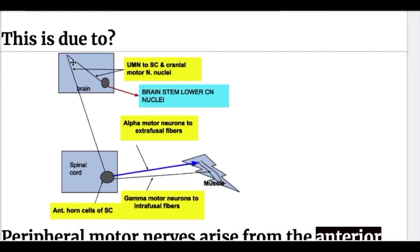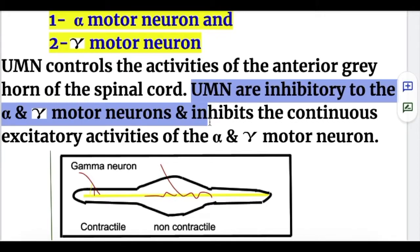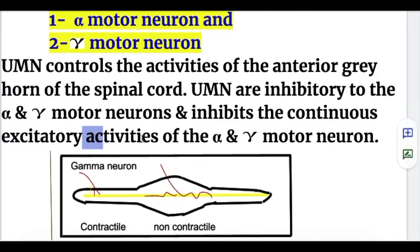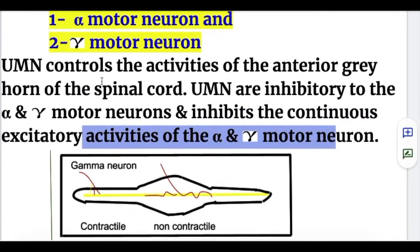The upper motor neurons — the pyramidal tract, corticospinal fibers, and corticobulbar fibers — control and inhibit the lower motor neurons. The upper motor neurons are inhibitory to the alpha and gamma motor neurons, inhibiting their continuous excitatory activities.